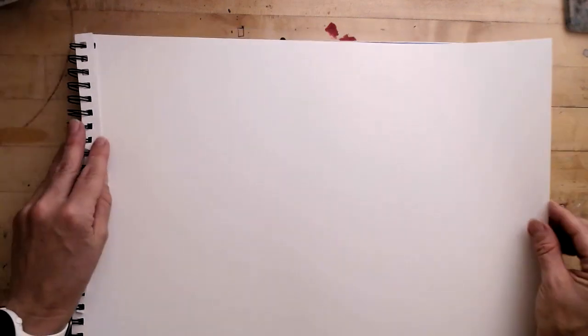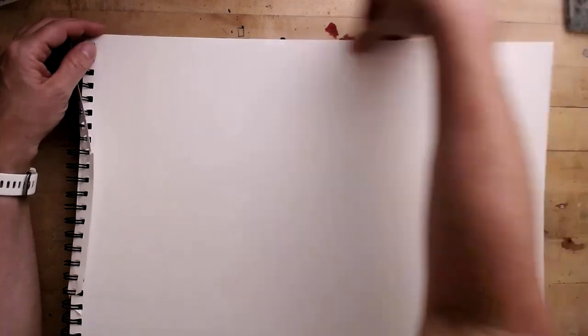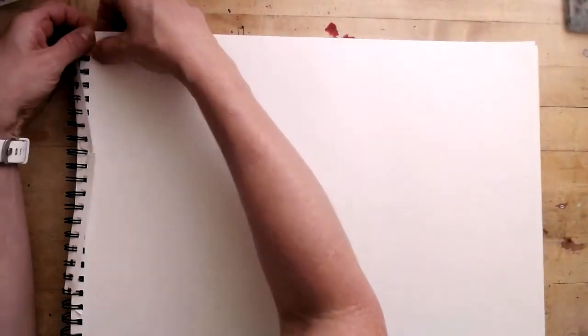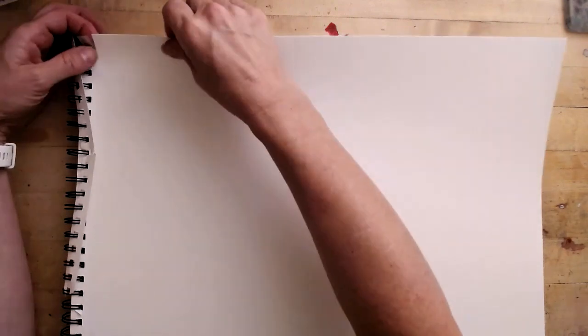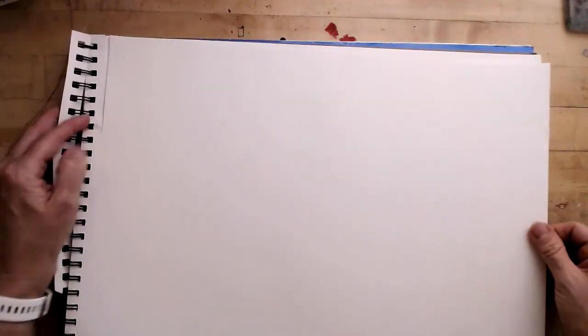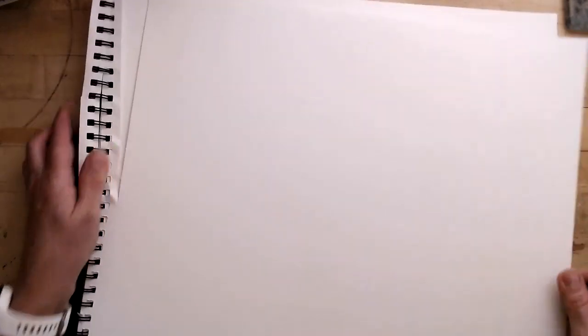So I'm going to use a page from my mixed media sketchbook so that I can use watercolor markers or even watercolor paints, watercolor pencils in my book and I don't have to worry about my watercolor markers not working or my paints degrading the paper. So I'm going to use one sheet of mixed media paper. This is big, this is 14 by 17.